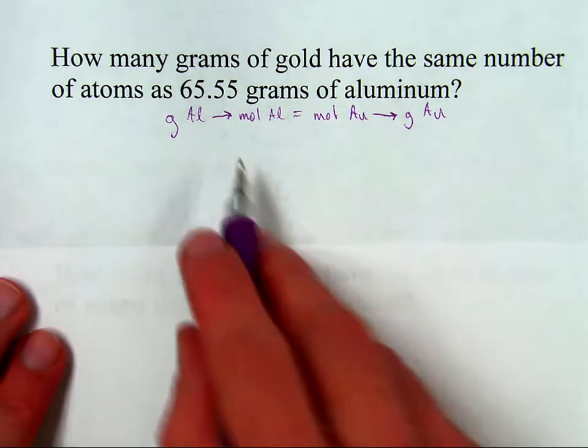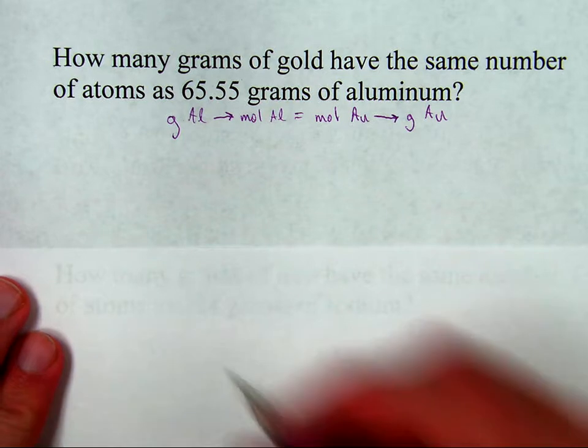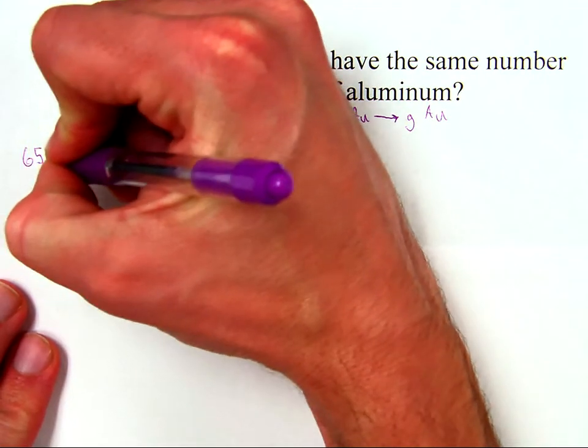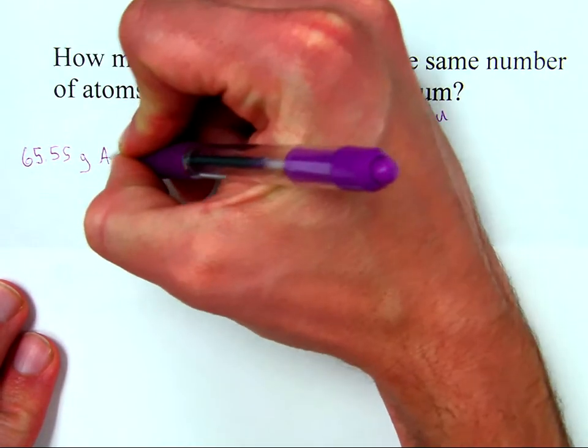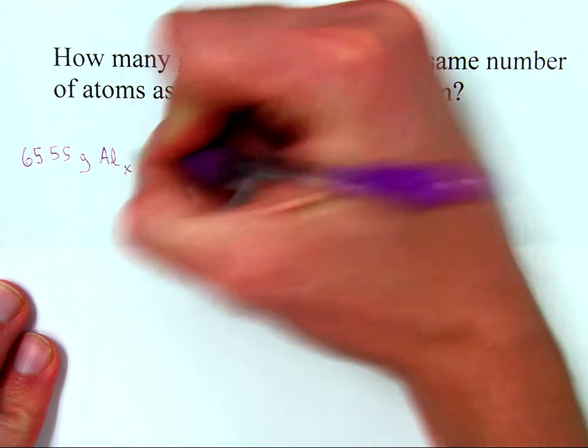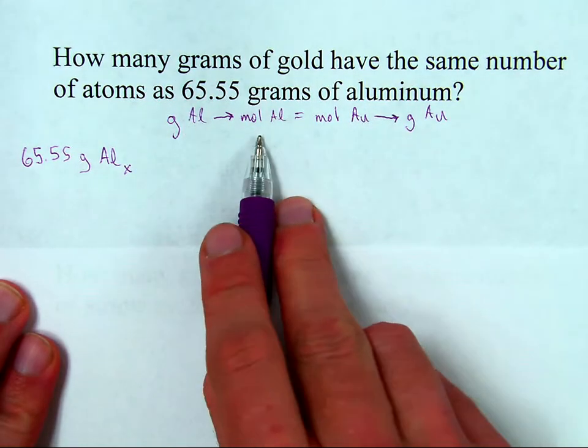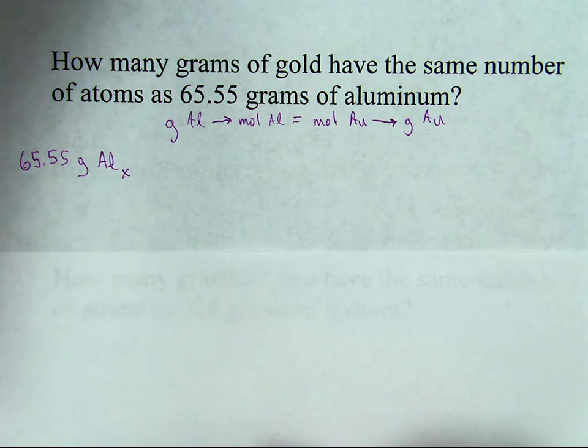Well, here we go. Write down what the question gives me. 65.55 grams of aluminum. And I'm going to convert that from grams of aluminum to moles of aluminum. So looking at the periodic table, I'm going to take what it says and round to the hundredths place.